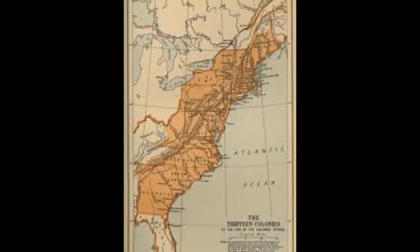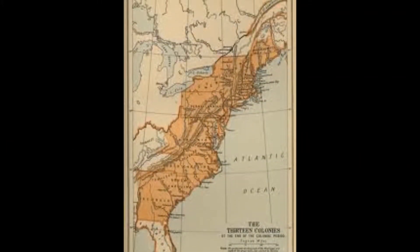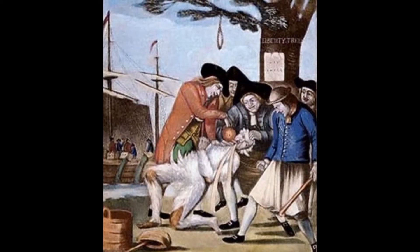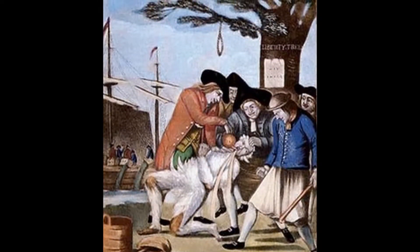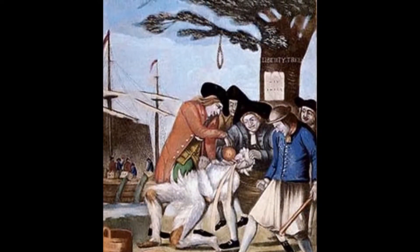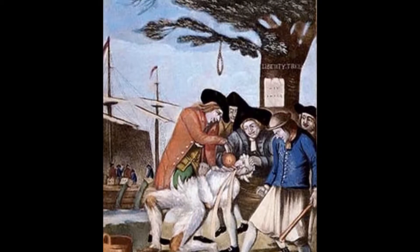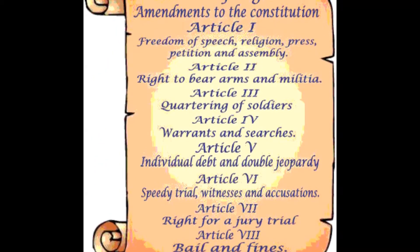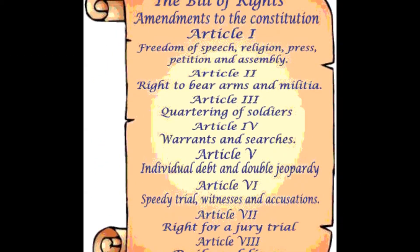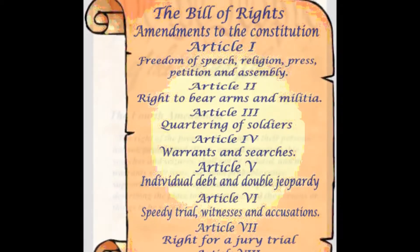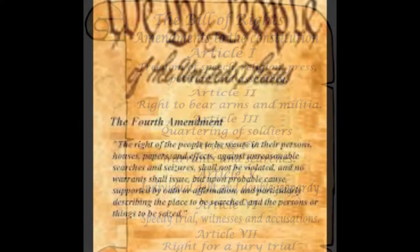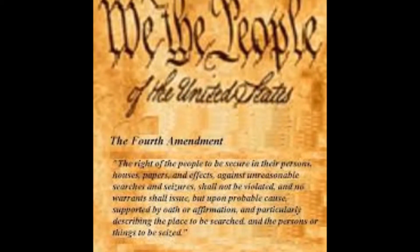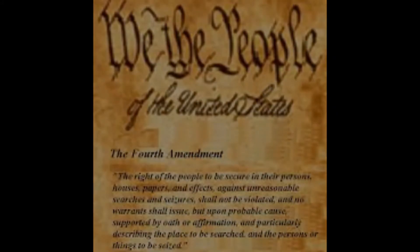Before the American Revolution, the English entered houses and buildings to seize prohibited goods from the colonists. The colonists were not happy with this activity, and consequently our Founding Fathers created an amendment within the Bill of Rights prohibiting illegal search and seizures. The Fourth Amendment requires a warrant supported with probable cause in order for a search and seizure to occur.